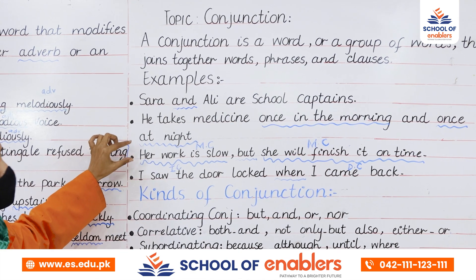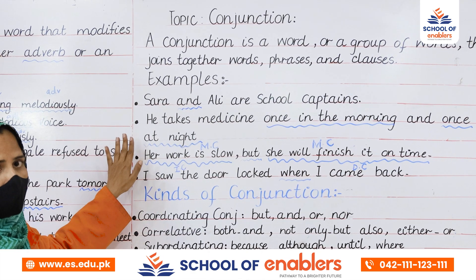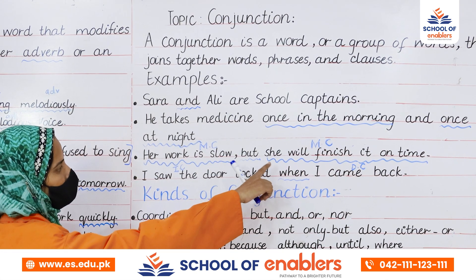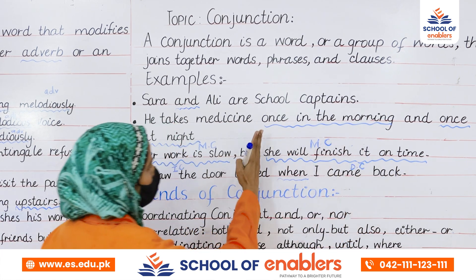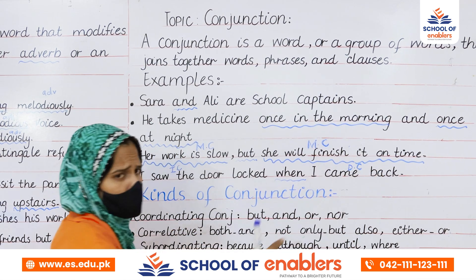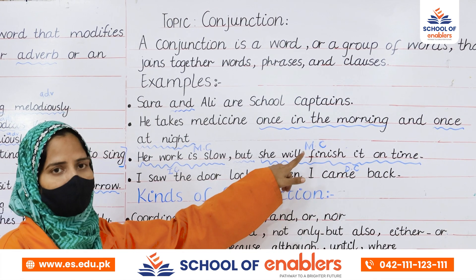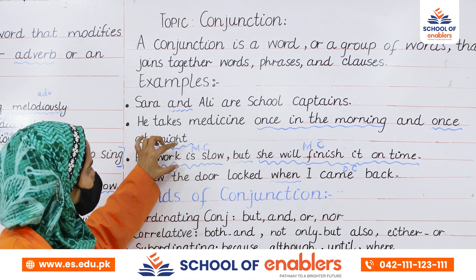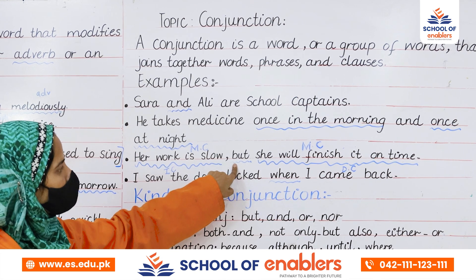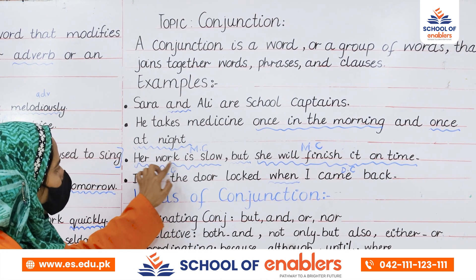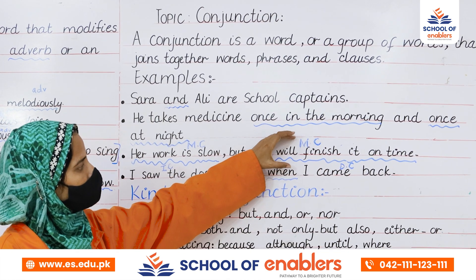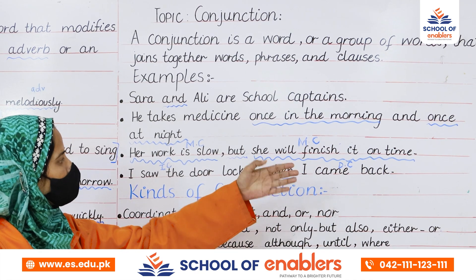Now look at the next sentence: 'Her work is slow.' This is an independent clause — a main clause that can stand on its own and makes sense. 'She will finish it on time' also makes sense on its own. But if we join these two main clauses with a word, that word is called a conjunction: 'Her work is slow but she will finish it on time.'